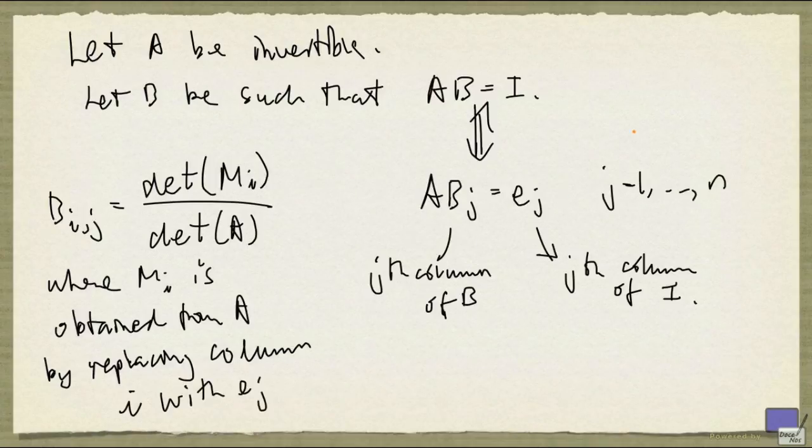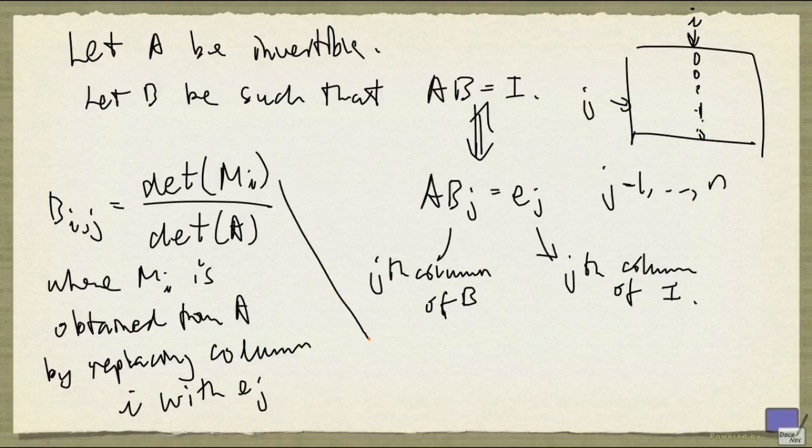Alright, so column i will have all zeros except in row j, which is a 1. We can actually simplify this determinant.